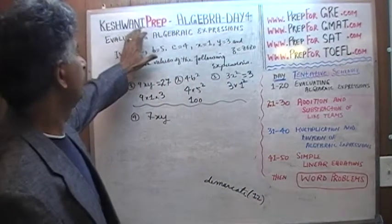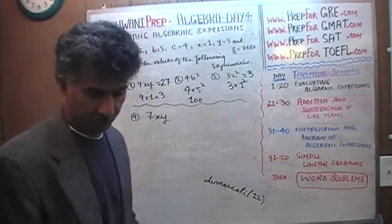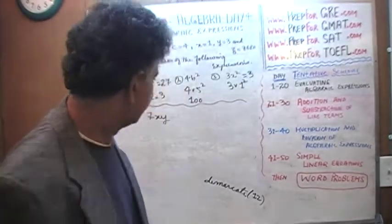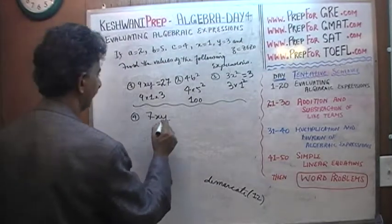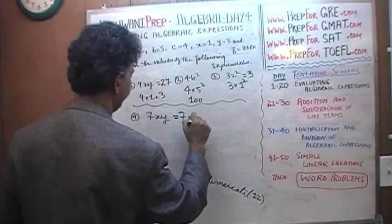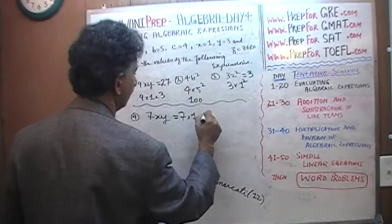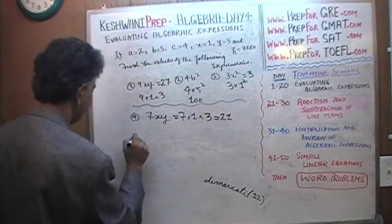Just type in Keshwani prep dash vocab dash day twelve and you will learn it. Number four: 7 times x times y. Seven times x, which is 1, times y, which is 3. So it's just 7 times 3, which is 21.